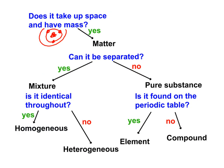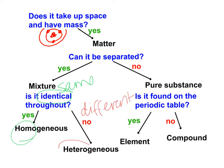Did you get it right? If it is identical — the same — it is homogeneous. If it is not identical, if it's different, then it is heterogeneous. If it's a pure substance and it's not found on the periodic table, it's a compound. If it can be found on the periodic table, it's an element.